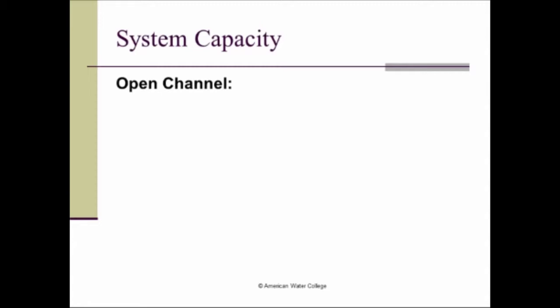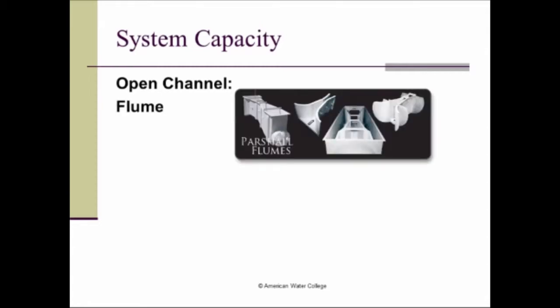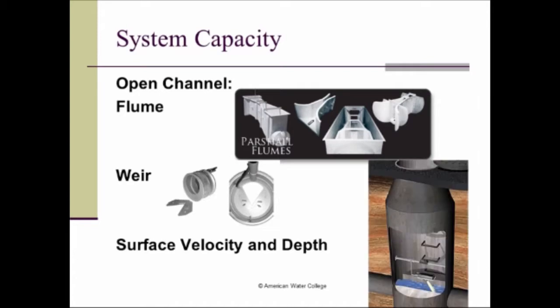Now in open channels, we have flumes, which again are, it's a way of choking down the flow through a constant flow path. And based on the height within that channel, you can estimate the flow. So that's a flume. And here we have pictured partial flumes. You can use a weir. And based on the height in the weir, you can estimate flow. And here pictured, we have a V-notch weir. And then you also have surface velocity and depth measurements. So you can use instrumentation that will detect the surface velocity, such as an ultrasonic meter, and then also the depth of the water and the combination of the depth and velocity can be converted into a flow measurement.